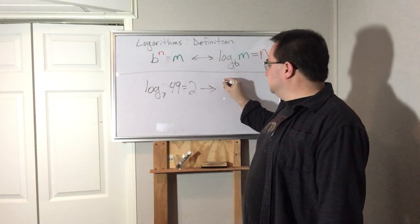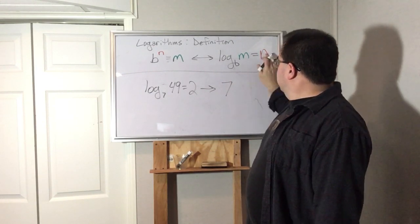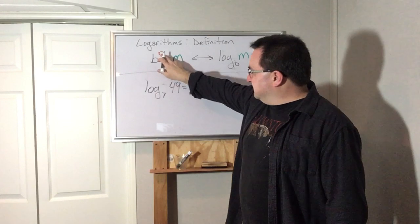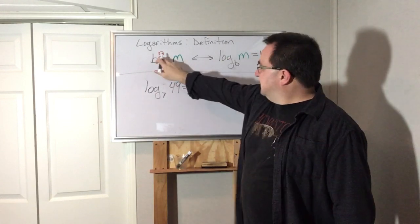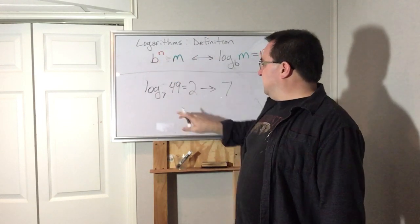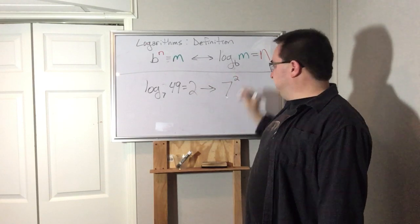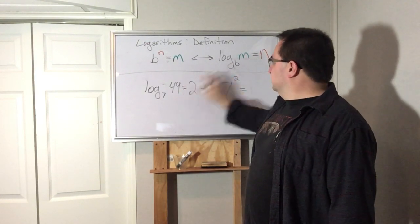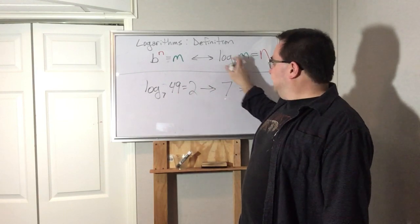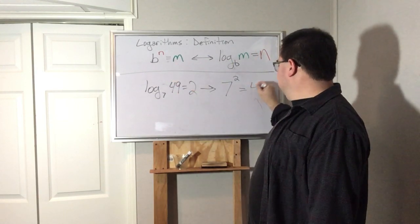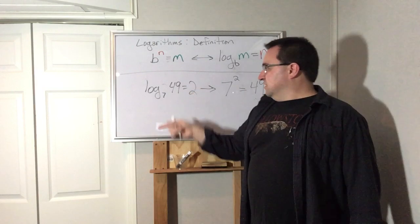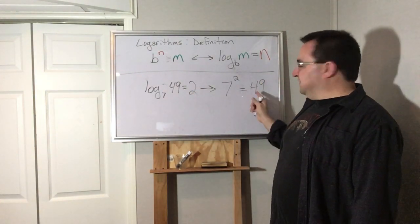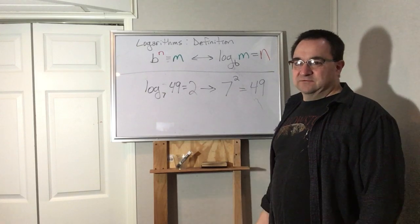See that number right there? That's the base, the thing that's raised to the power. The number over here by itself in a logarithm is the power. The number by itself is the power, so that 2 is the power. And this number right by the logarithm, the normal size number, that's actually the answer to the exponential equation. So log base 7 of 49 equals 2 is exactly the same as saying 7 squared equals 49.